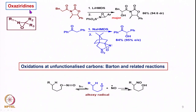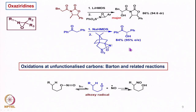Then we saw the utility of oxaziridines of this type: starting from an optically active starting material with a chiral auxiliary, we obtained the corresponding compound in which the hydroxy group can be stereoselectively introduced. We can also take the chiral oxaziridine and oxidize ketones having prochiral hydrogens to the corresponding alpha-hydroxy ketones with high enantioselectivity.